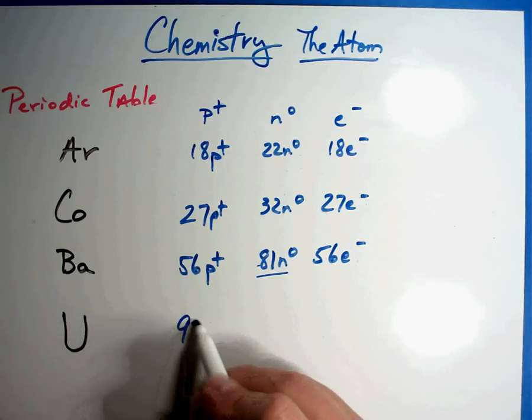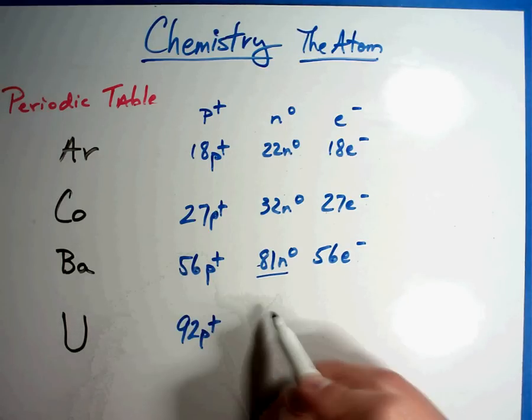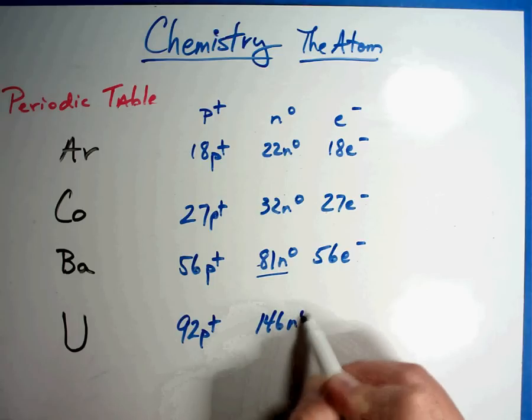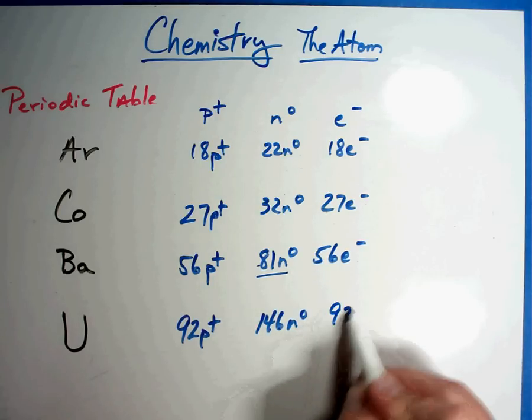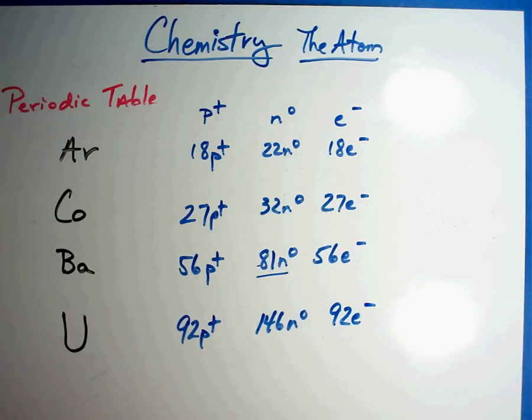And last but not least, uranium, 92 protons, 146 neutrons, and 92 electrons. If you can calculate these values and you got them on your own, you're set. We can move on to the next session.